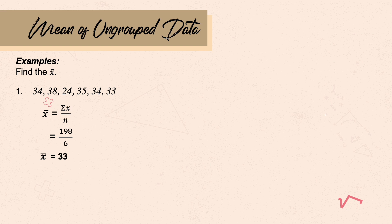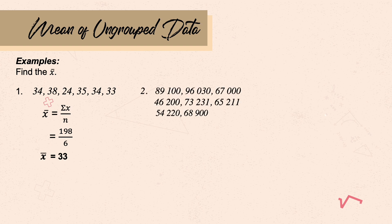Number 2. Given the data, get the sum and count the sample size. Counting this, we have 8 values. Using the formula, the sum is 602,768 divided by the sample size, which is 8. So the mean is 66,974.22.